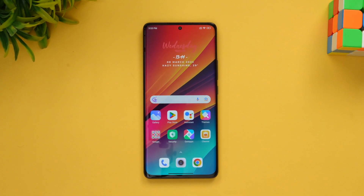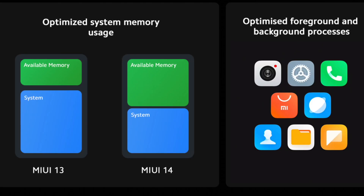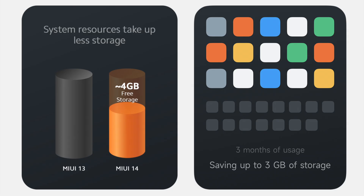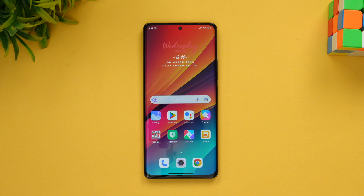First, some under-the-hood changes. Memory usage has been reduced drastically on MIUI 14 — Xiaomi has shown a graphical representation of how memory usage has been reduced, which will definitely help with better memory management. Apart from that, this device also comes with a lighter firmware. Compared to MIUI 13, MIUI 14 has a 4 GB size difference — MIUI 13 was around 17 GB in internal storage, but MIUI 14 is now 13 GB, so almost a 4 GB difference.